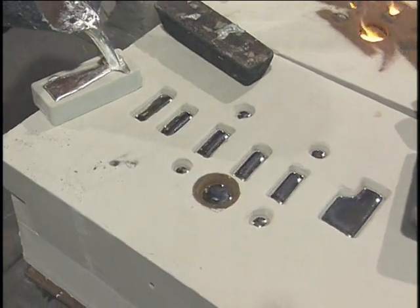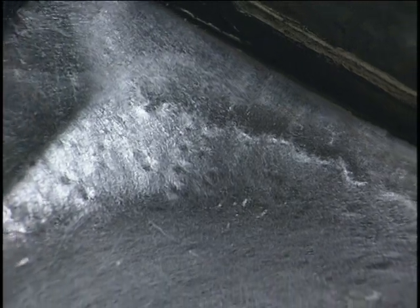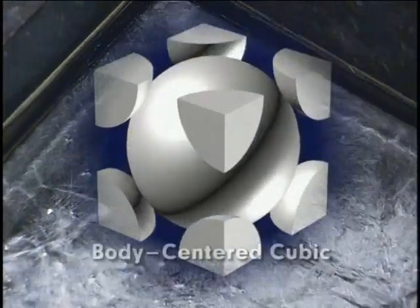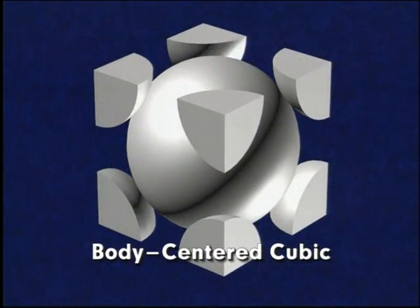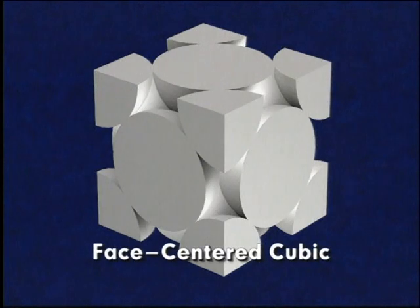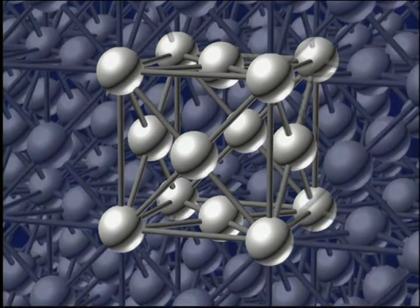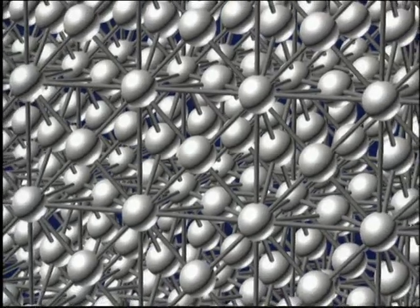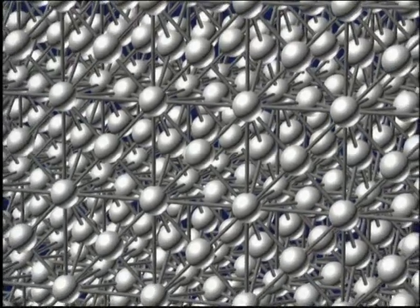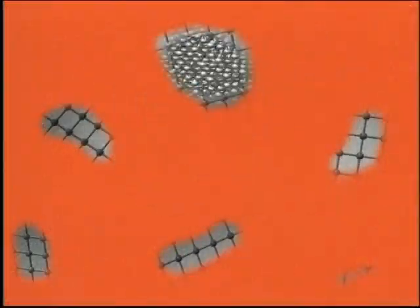When a molten metal solidifies, the atoms arrange themselves into definite patterns called crystal structures. The two most common crystal structures in metals are body-centered cubic and face-centered cubic. These crystal structures grow uniformly in all directions within each developing crystal. As the metal cools, these crystals are confined by the adjacent developing crystals, forming grains.